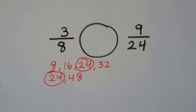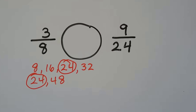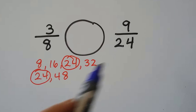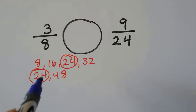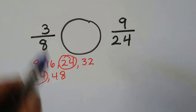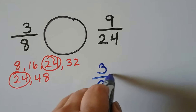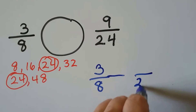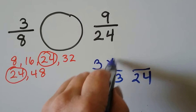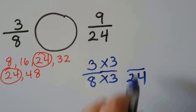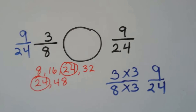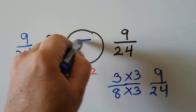Which is bigger: three-eighths or nine twenty-fourths? List multiples of eight and multiples of twenty-four — they can meet at twenty-four. Three-eighths needs to be converted to have twenty-four as a denominator. Eight times three is twenty-four, so the numerator gets multiplied by three — giving nine twenty-fourths. Now on both sides we have nine twenty-fourths. They're equal!